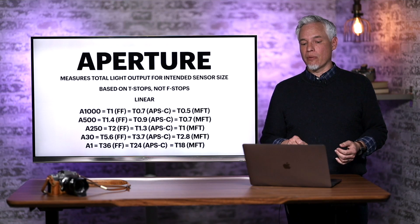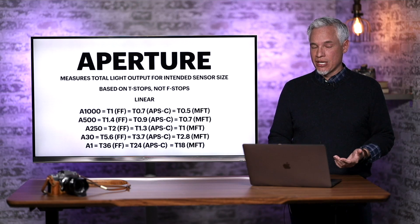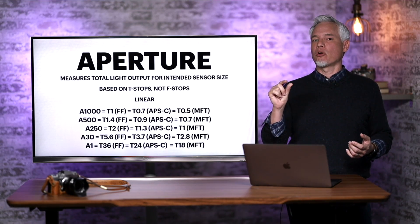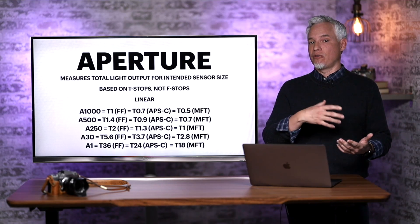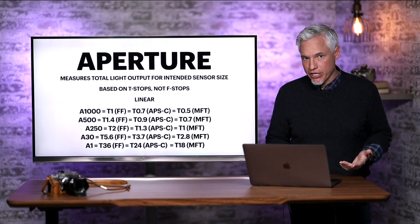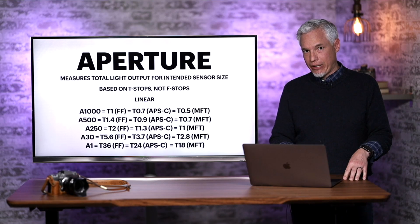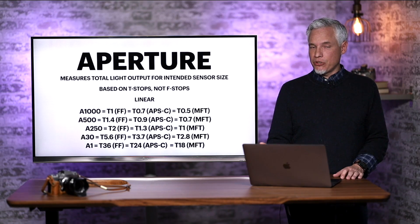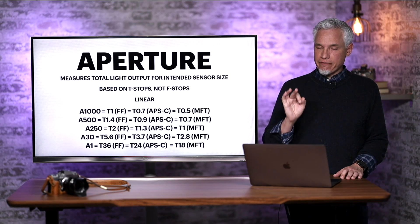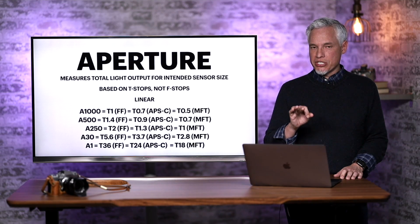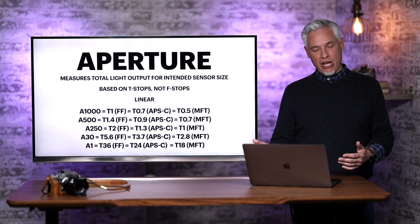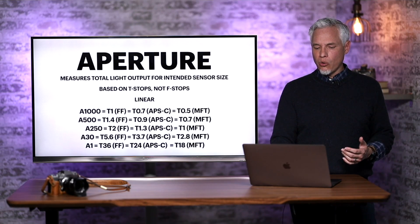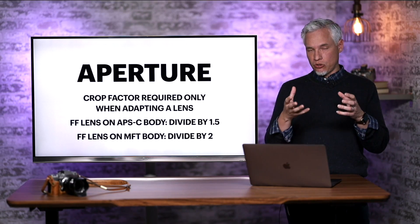Perhaps more importantly, I'm no longer measuring aperture based on light intensity. F-stops and t-stops measure light intensity — the amount of light per square inch — so an f2.8 lens is f2.8 on a full-frame camera or a micro four-thirds camera, even though they produce very different results. I want photographers to switch between full-frame and micro four-thirds without constant crop factor calculations. For example, the new setting A30 relates exactly to t5.6 on a full-frame camera, t3.7 on an APS-C camera, or t2.8 on a micro four-thirds camera. Dial in A30 on any of those cameras and you get the exact same total light, background blur, and depth of field.